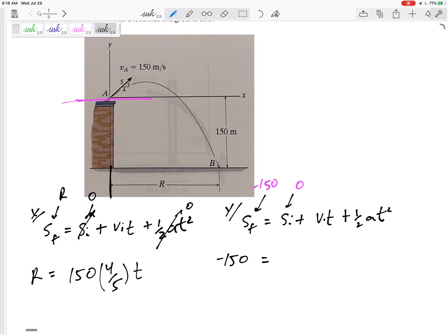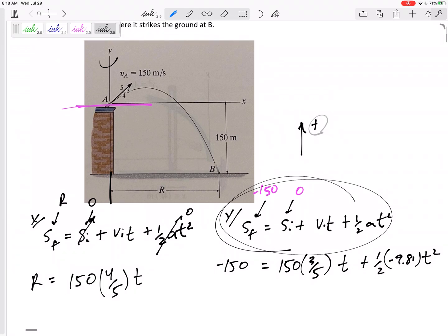V initial, only the y—remember, only the y—150 times three-fifths times t, plus one half times negative 9.81 t squared. Again, be consistent. If we're calling everything else positive up—and it's labeled right there, generally we will do everything positive up—so then that acceleration is negative 9.81.